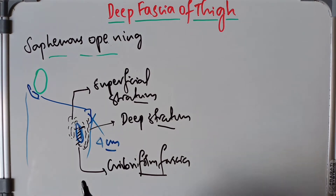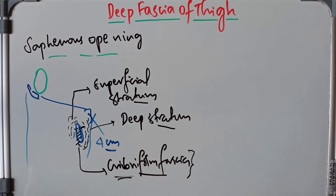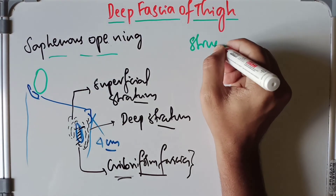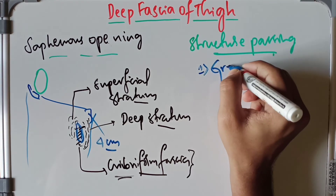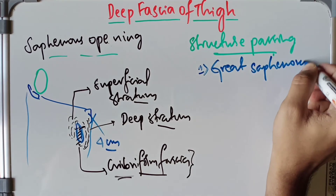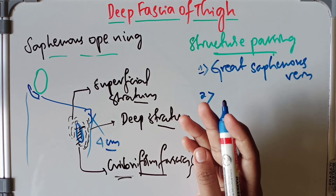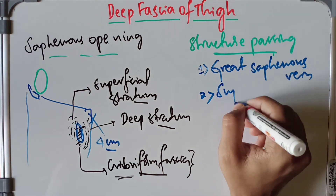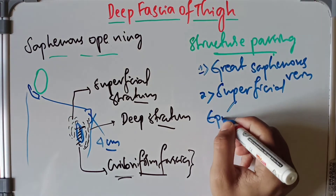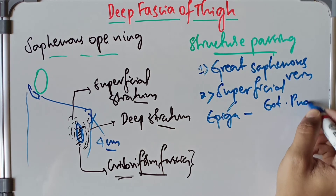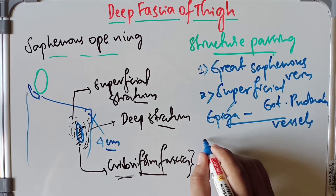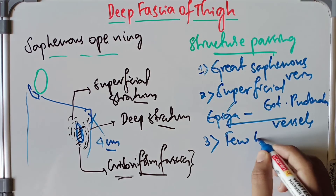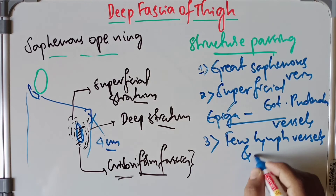Why is it called the cribriform fascia? The saphenous opening is closed by a membrane of areolar tissue — that is the cribriform fascia — and it is pierced by a number of structures, making it sieve-like, hence the name cribriform fascia. The structures passing through the saphenous opening are: number one, the great saphenous vein; number two, the superficial epigastric vessels and the superficial external pudendal vessels; and also a few lymph vessels and lymph nodes.